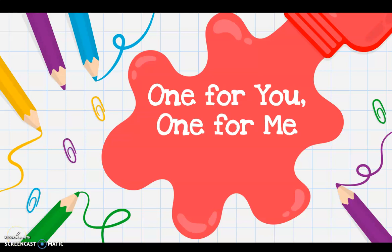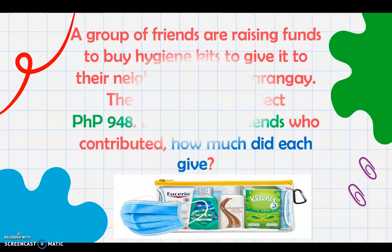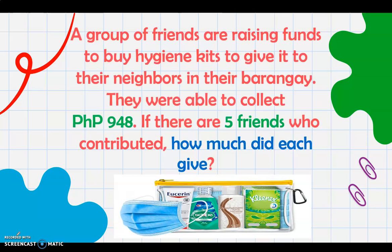Let's read a story for today about one for you, one for me. A group of friends are raising funds to buy hygiene kits to give to their neighbors in their barangay. They were able to collect 948 pesos. If there are 5 friends who contributed, how much did each give? This kind of story problem requires us to divide. So we divide 948 divided by 5 friends.